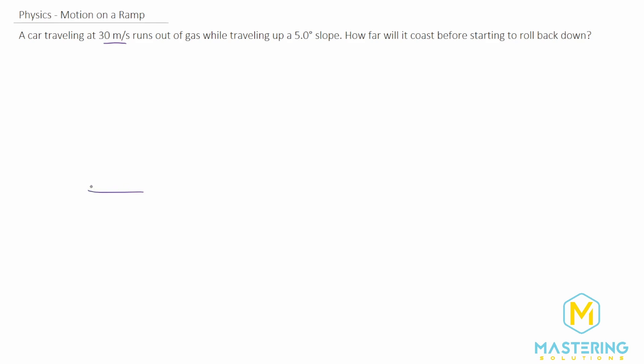So let's draw our ramp here. They tell us it's five degrees. And we have our car. We need to find out how far it'll coast. What we're going to do is use a tilted coordinate grid, meaning that this slope right here is our x-axis, and then this will be our y-axis. So it's not at a true vertical horizontal, it's shifted relative to the slope.